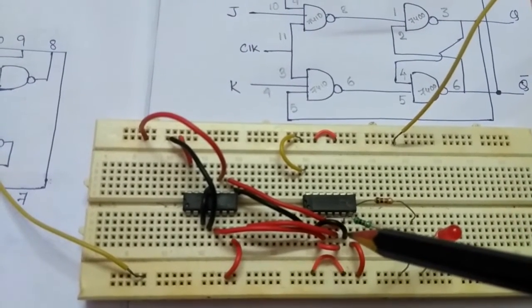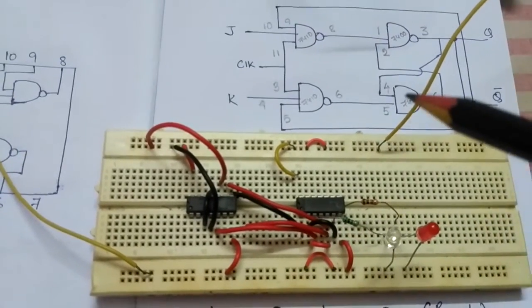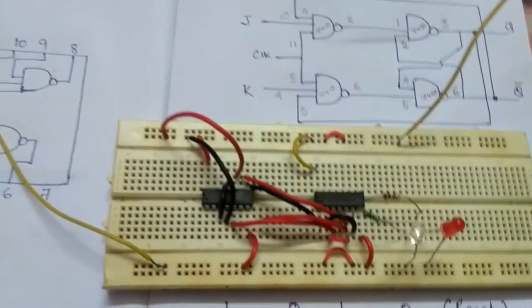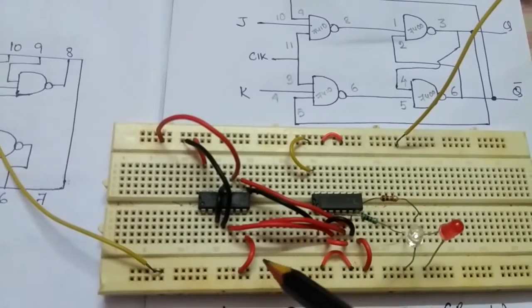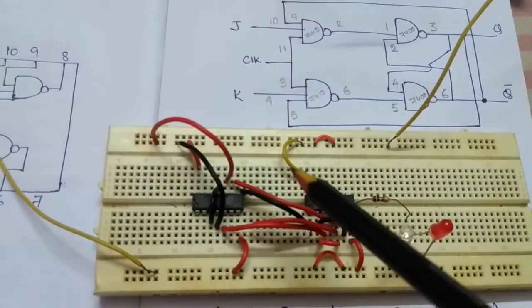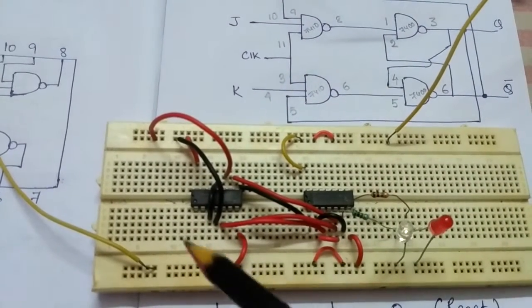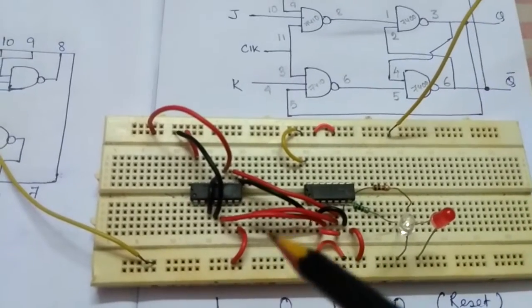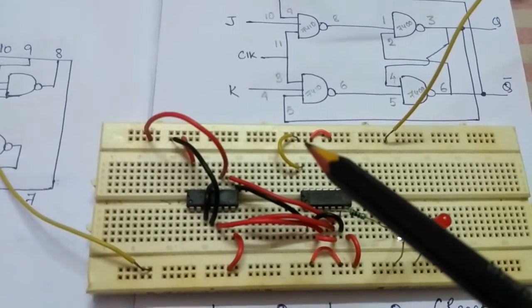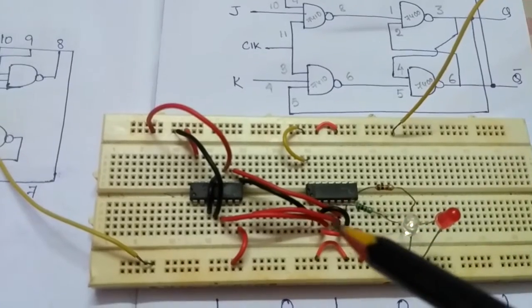Most of the connections are explained now. You all know that you have to connect pin 7 and pin 14 of each IC to ground and plus voltage.